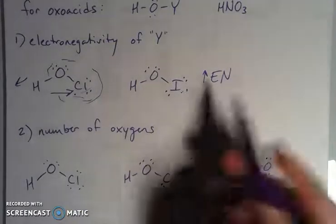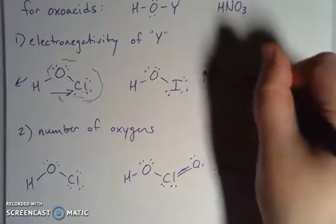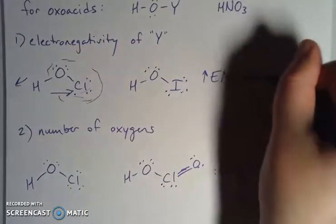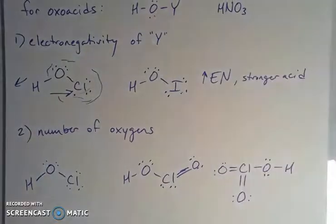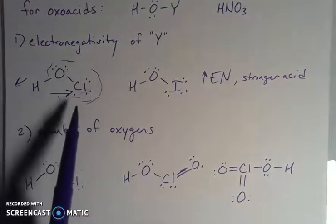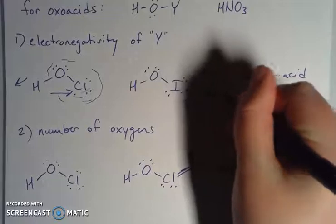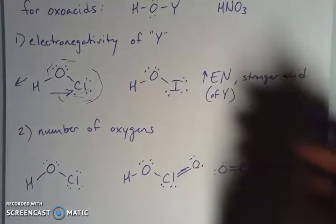We already know that oxygen is an electron hog. So it's really what else is there. If there's another electron hog there, the greater the electronegativity of that generalized Y, then the stronger the acid.